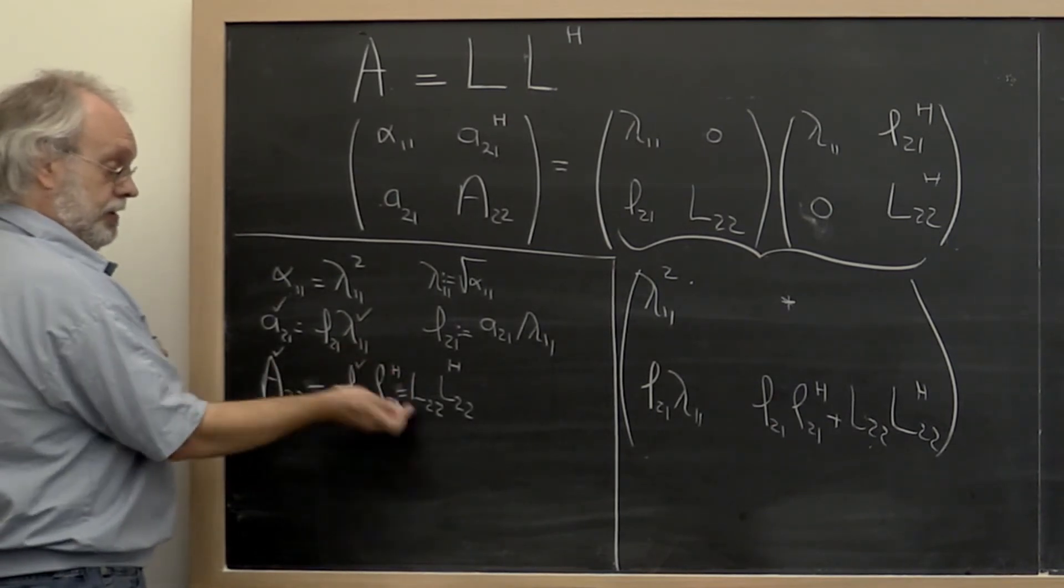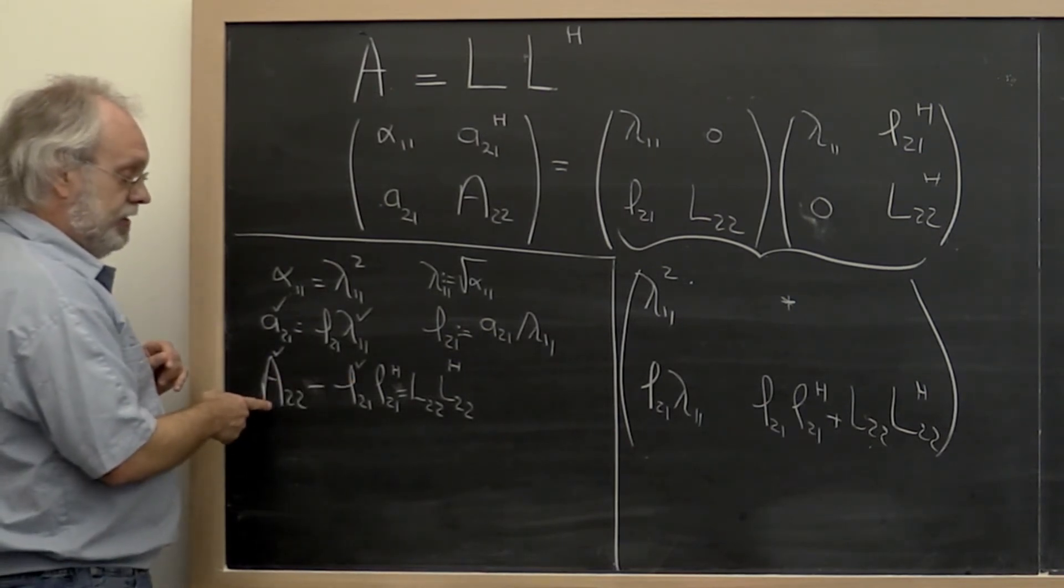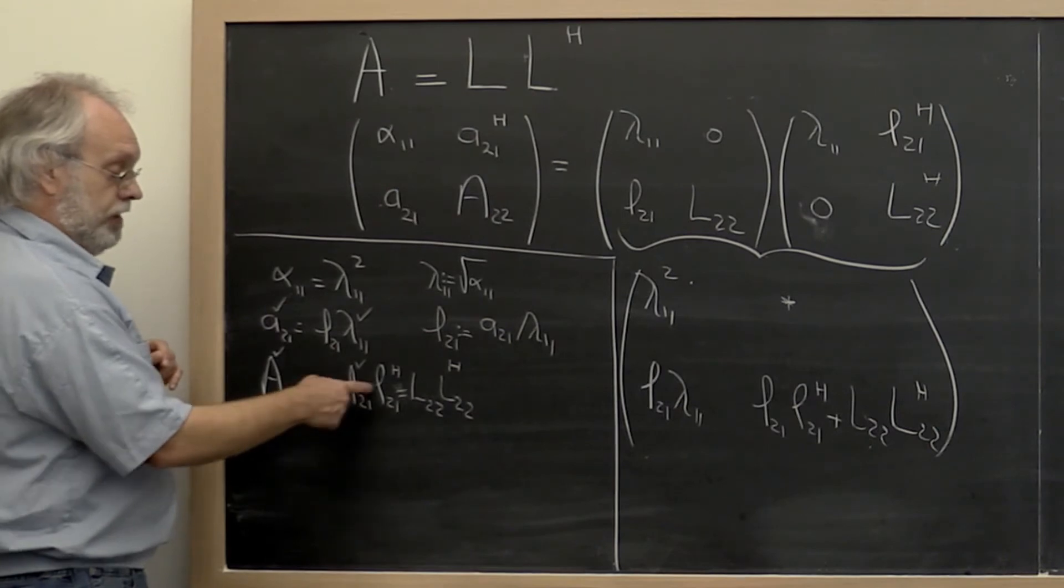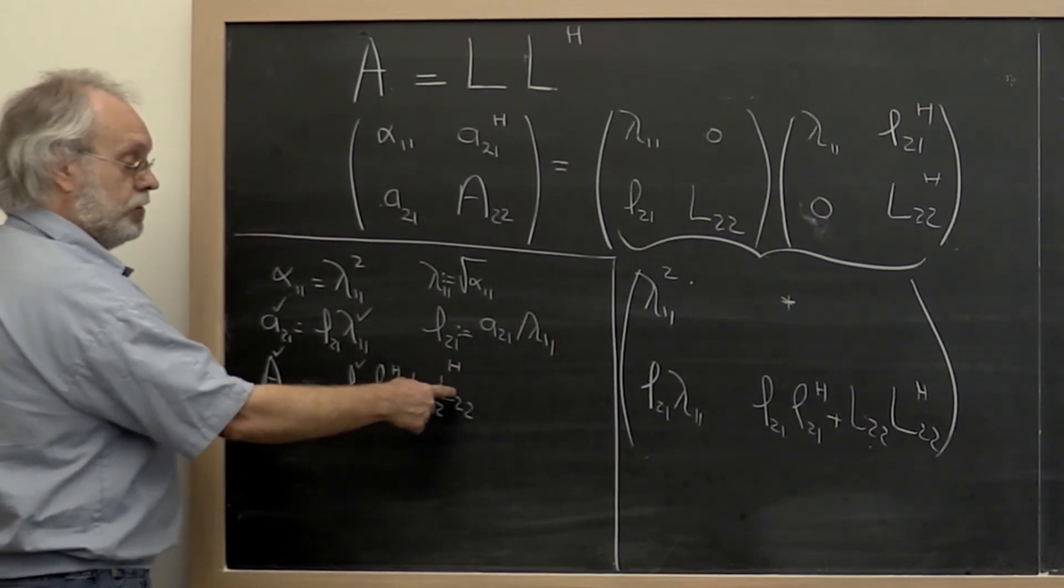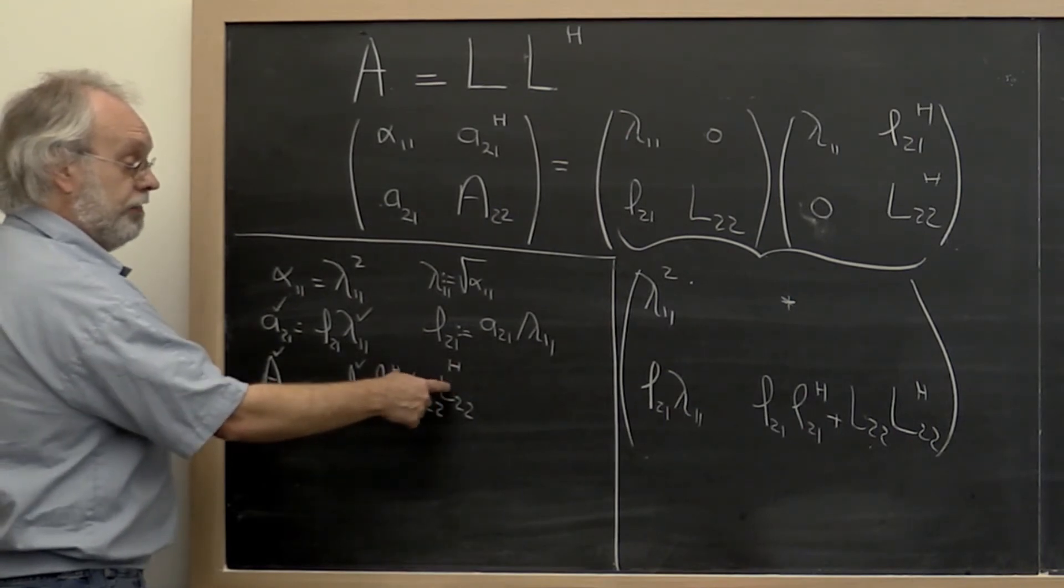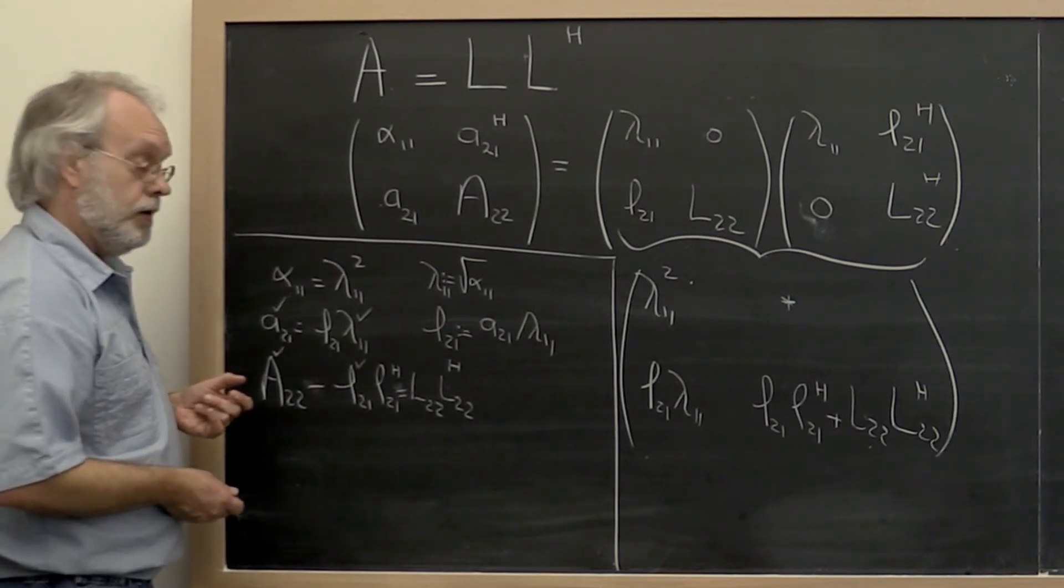Bring this to the other side. And from that we conclude that if we update A_2,2 by subtracting off this outer product, then all we're left with is having to compute the Cholesky factorization of this smaller sub-problem.